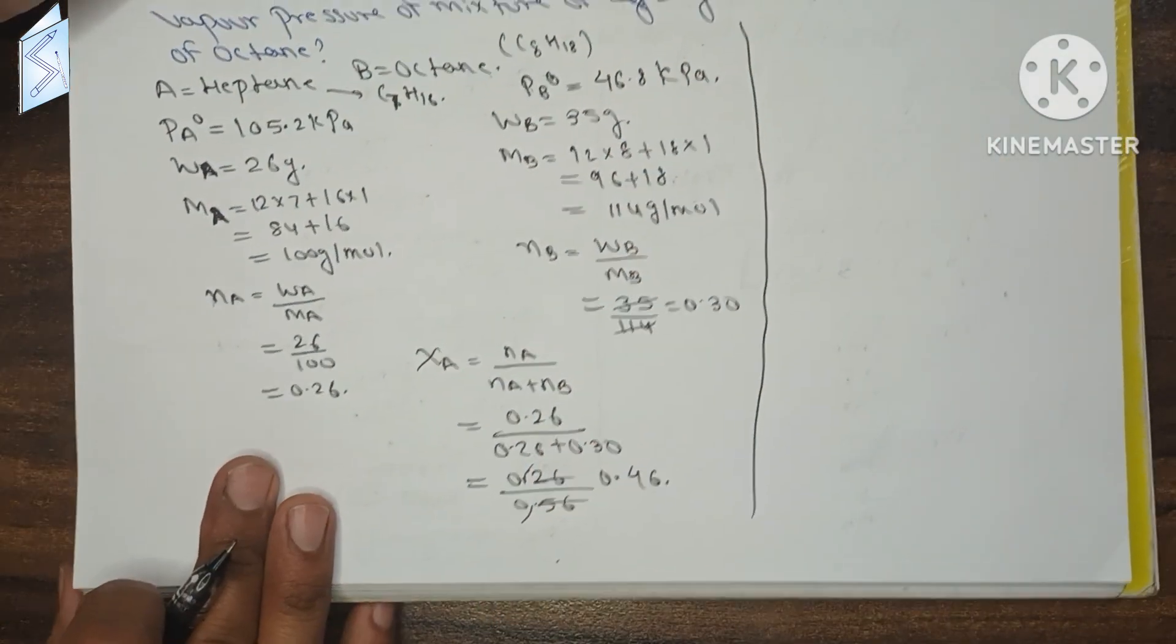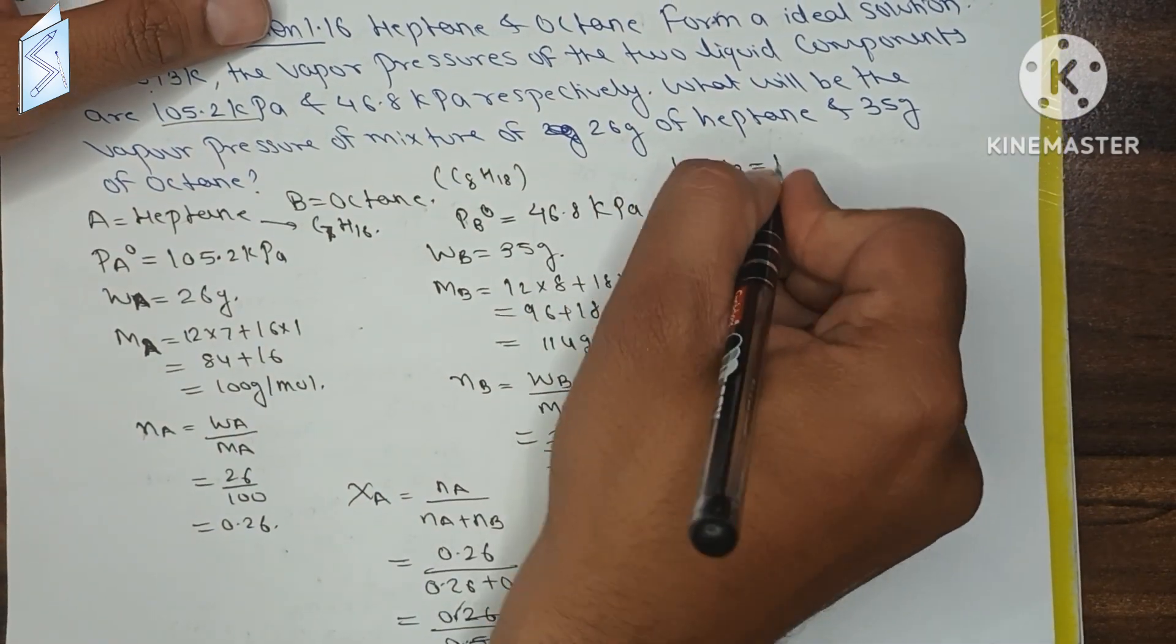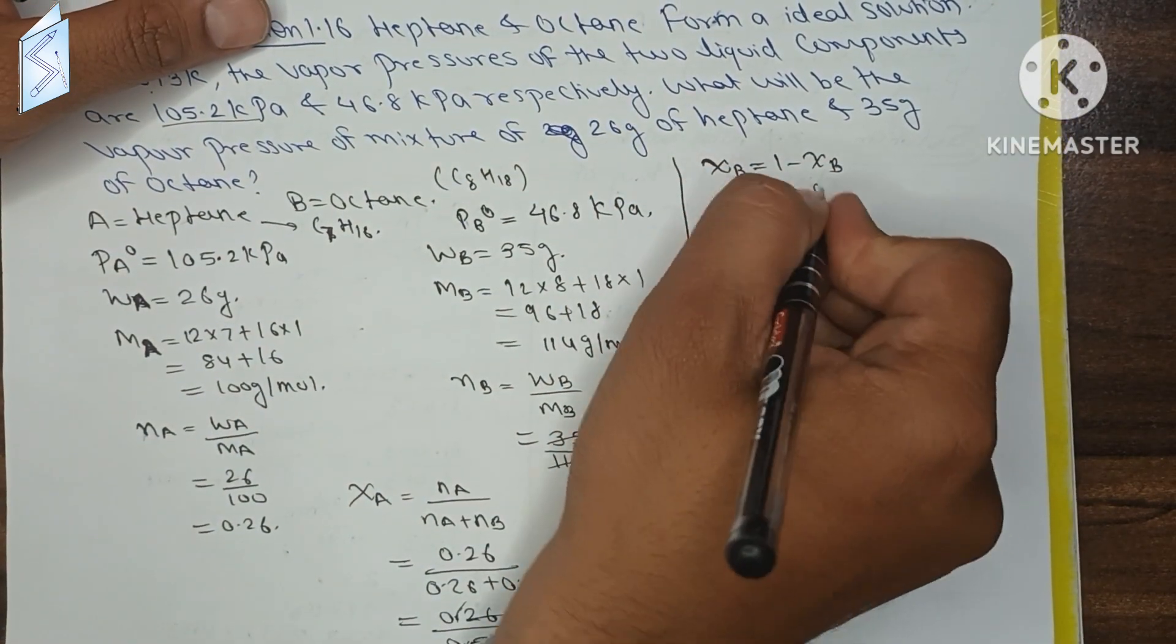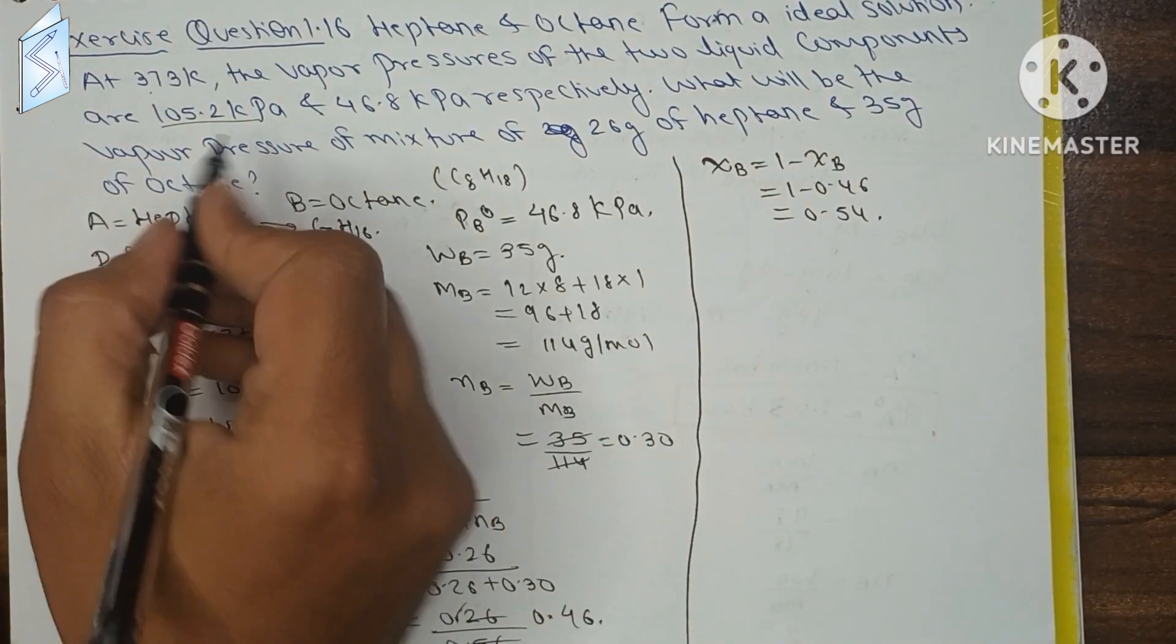So mole fraction we got. XB will be 1 minus XA, which is 1 minus 0.46, equals 0.54.